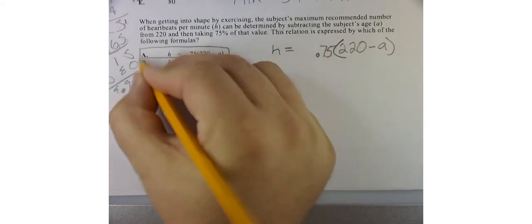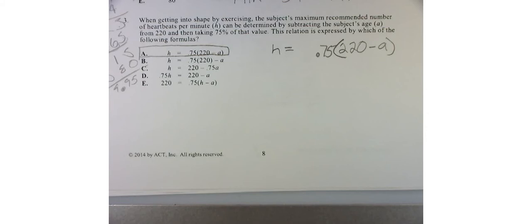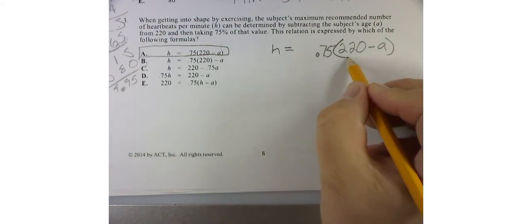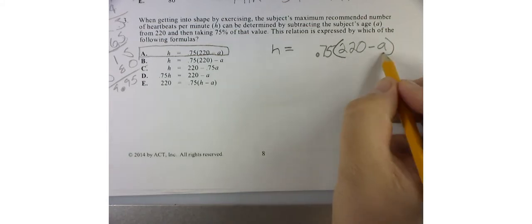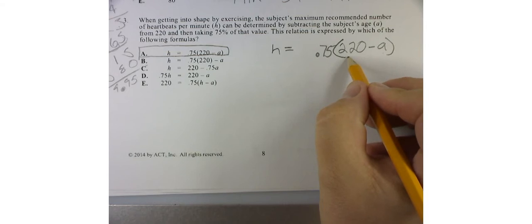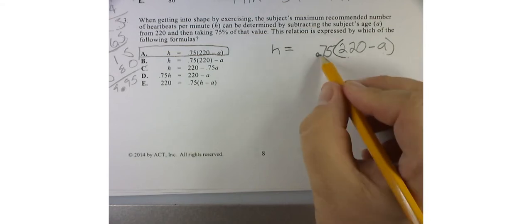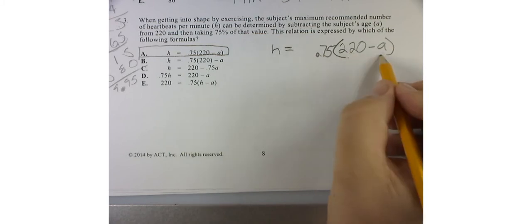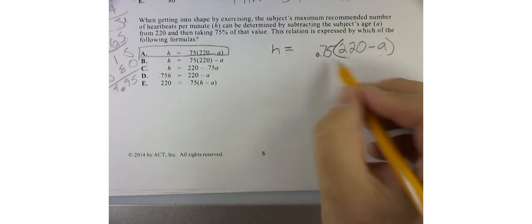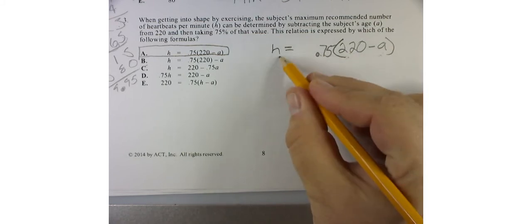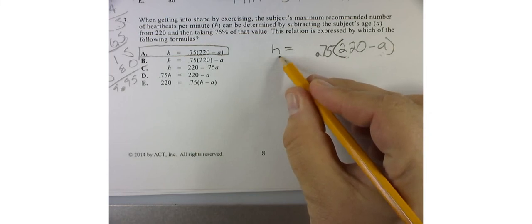If you're not sure, just think about it. What would I do? Following the order of operations, I have to take their age and subtract it from 220 — that gives me a number. Then if I multiply it by 0.75, that gives me 75% of that number, and that is the maximum recommended heartbeats based on age.